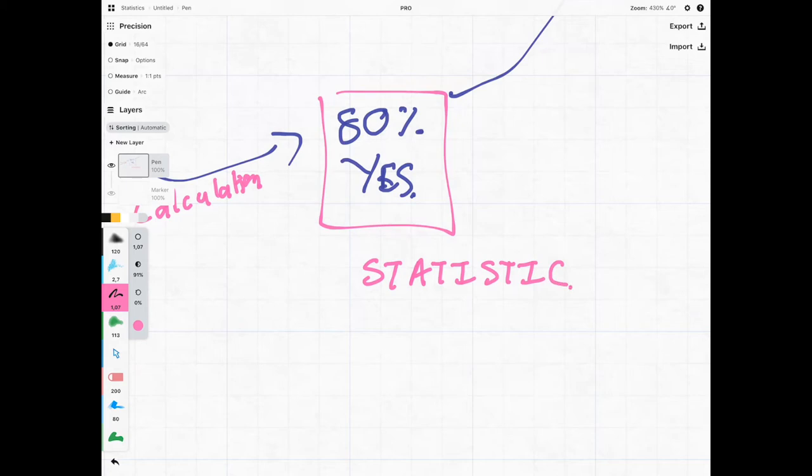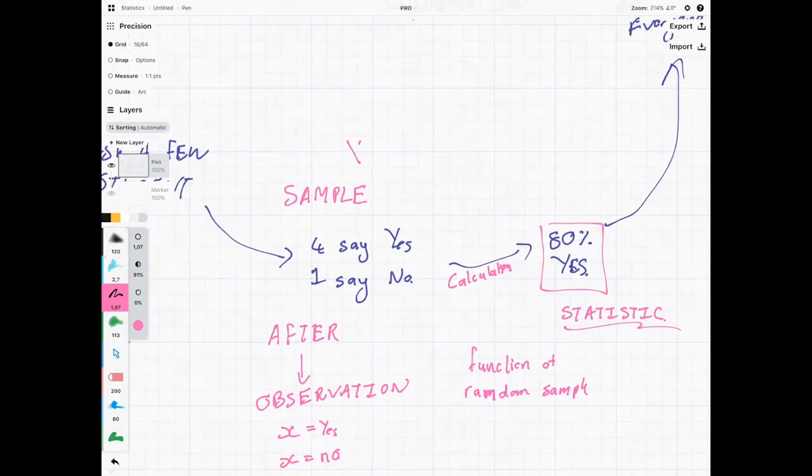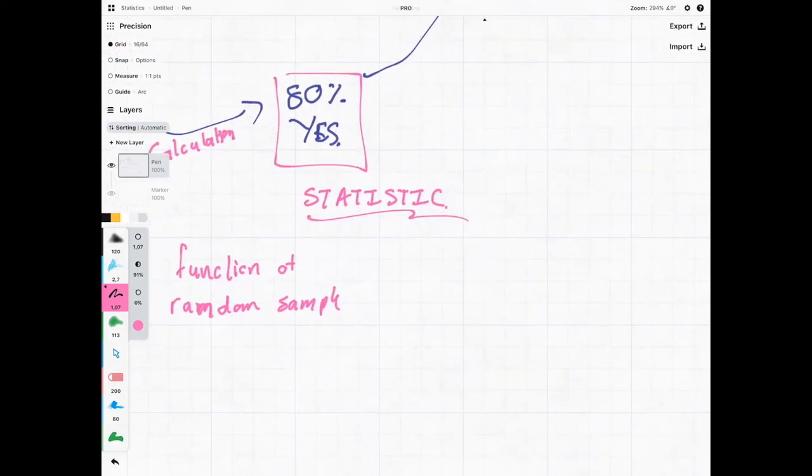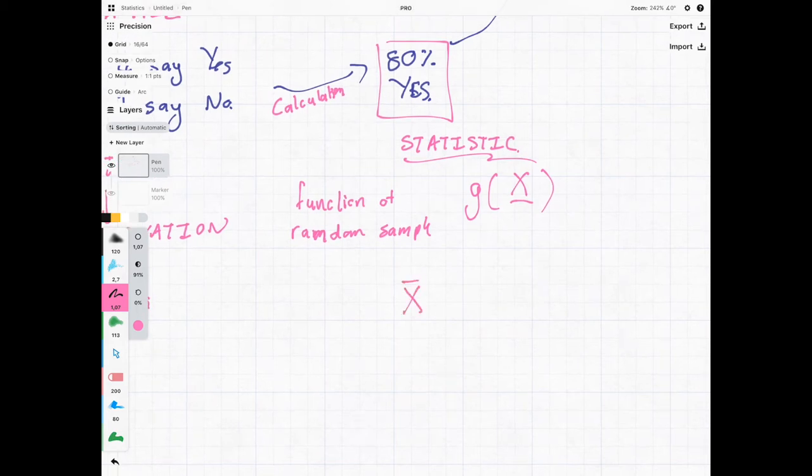But what exactly is a statistic? If we had to define this in more technical terms, we can say that a statistic is a function of our random sample. So if we denote our random sample by X underscore, then a statistic is anything of a function of this random sample. What we're using here is a very famous statistic known as X bar.